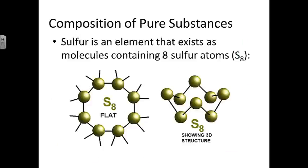Sulfur is an element that exists as molecules containing eight sulfur atoms. If we look down on it from the top, it looks like the picture on the left. However, if we look at it from the side so you can see the three-dimensional structure, it kind of forms a crown that goes around in a circle.